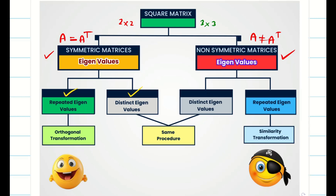In today's session, we are going to deal with non-symmetric matrices. If all the eigenvalues are distinct, you can use the same procedure as for symmetric matrices — substitute the eigenvalues and find the corresponding eigenvectors x1, x2, x3 as usual; there is no difference. But if some eigenvalues are the same, here we are not going to use orthogonal transformation, because in symmetric matrices alone all eigenvectors are mutually orthogonal. In a non-symmetric matrix, the eigenvectors need not be orthogonal to each other.